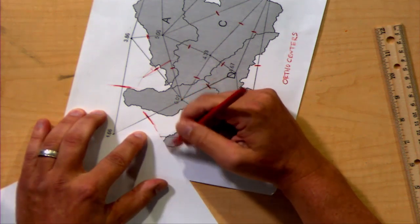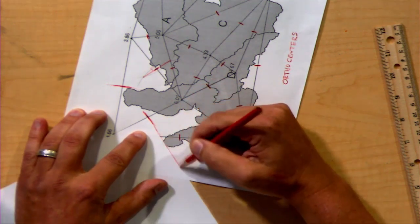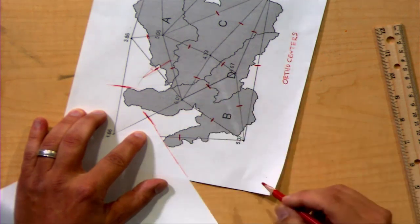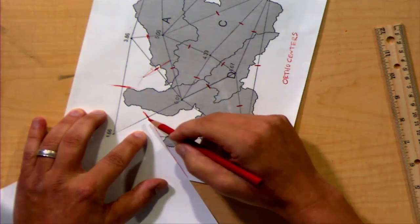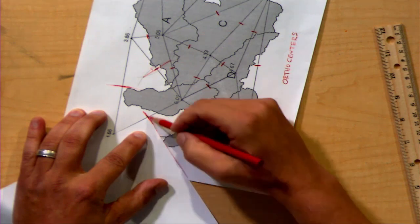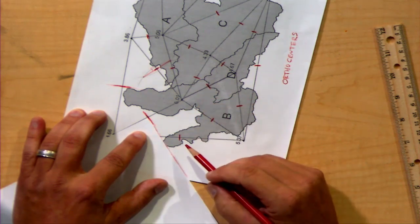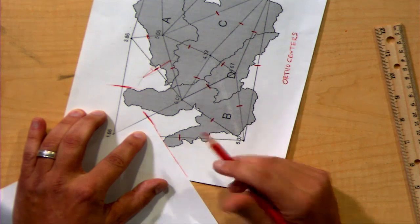And from there, I'm going to lightly sketch a line that comes out from there. Why did I go in this direction? Generally, you're going to go in the direction that moves toward the other lines in the triangle, although that will not always necessarily be into the triangle.